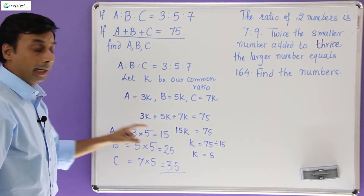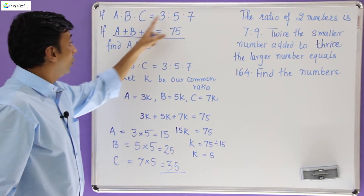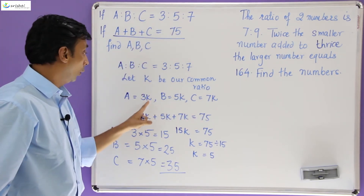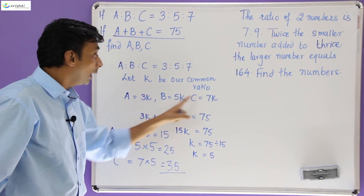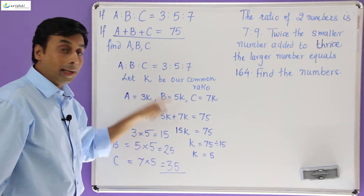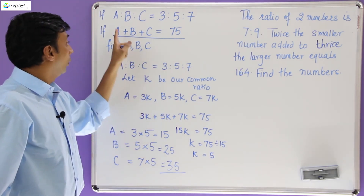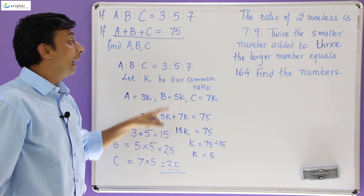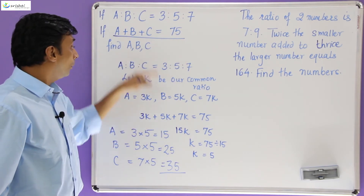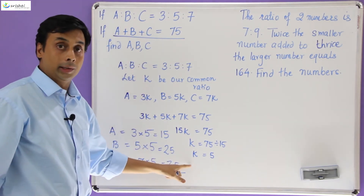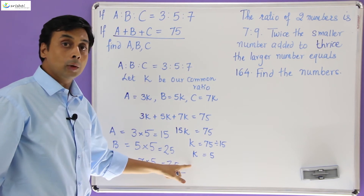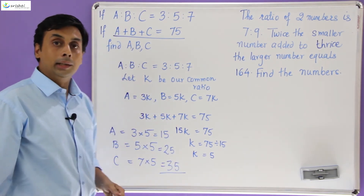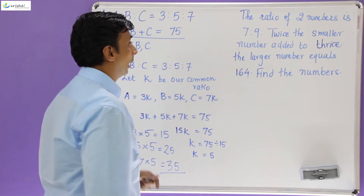So we saw here that the ratio gives us an idea of what the numbers are, but those numbers are unknown because the common ratio is unknown. To find the common ratio you need an additional condition in the form of an equation, and from that equation you can find the common ratio. Once you find the common ratio, you can easily find the individual numbers.